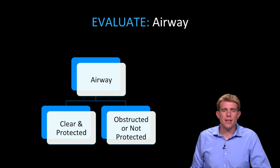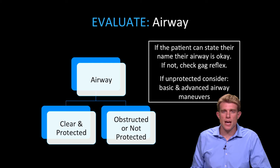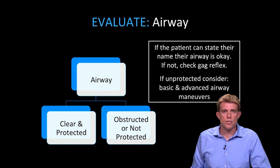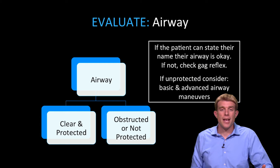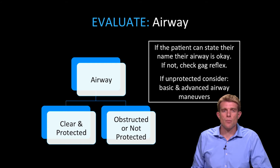Now I move on to airway. What I want to learn is: is their airway obstructed, or not protected, or is it normal? And once again, the simplest way to do that is to ask the patient to state their name. If the patient is able to speak clearly, they generally have an intact gag reflex and a clear airway. If they are not able to speak, then you need to check their airway more closely and make sure that it's open. Any unprotected airway should be handled immediately with basic and advanced airway maneuvers.